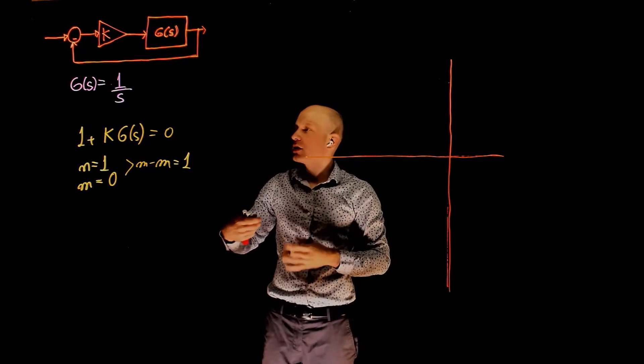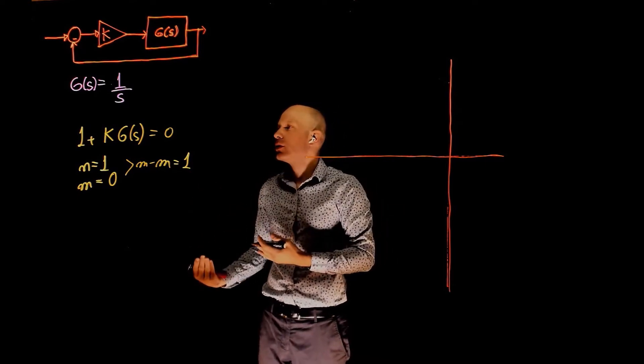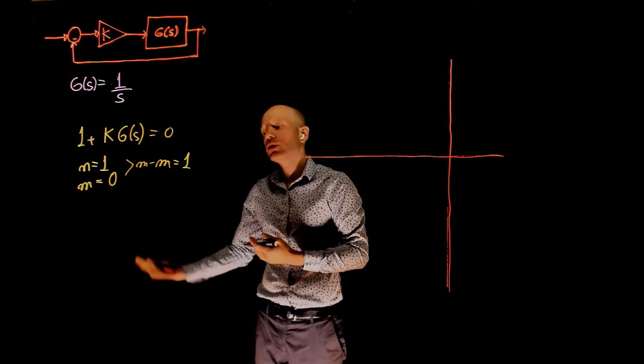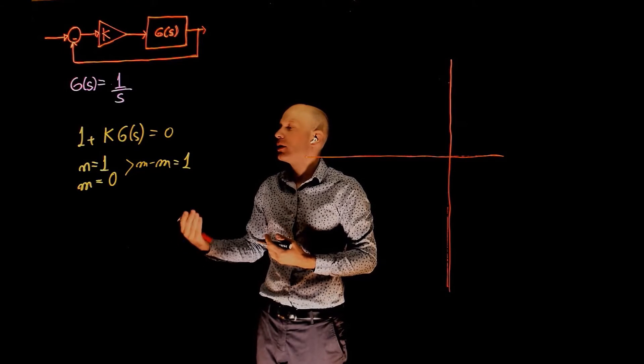This means we have an excess of one pole. There is one more pole than zeros, and that pole doesn't have a zero to go to, so it has to go to infinity, and it goes to infinity following an asymptote.